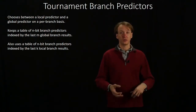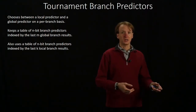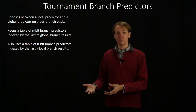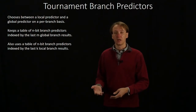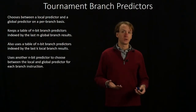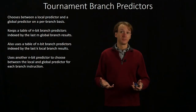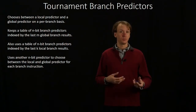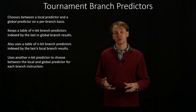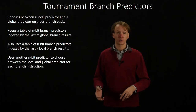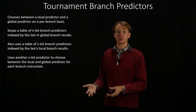Now we've got N-bit branch predictors for the global side and N-bit branch predictors for the local side, and we can choose between those by using another branch predictor — probably a two-bit branch predictor — that will choose whether we should use the global branch predictor or the local branch predictor.